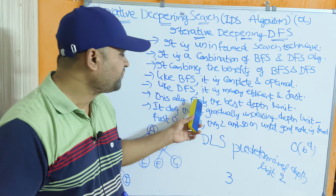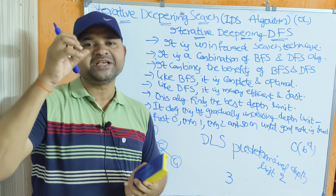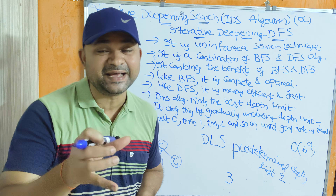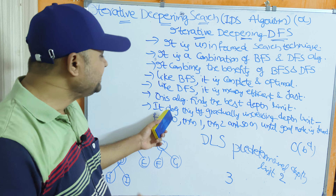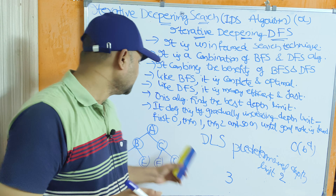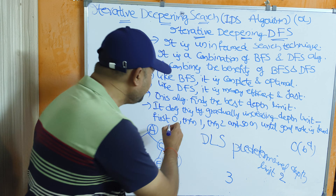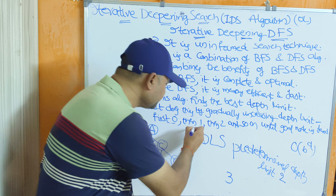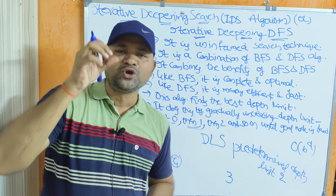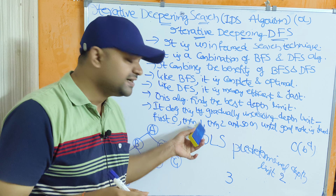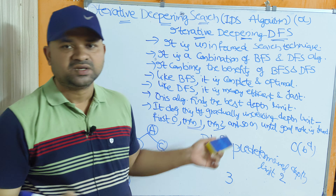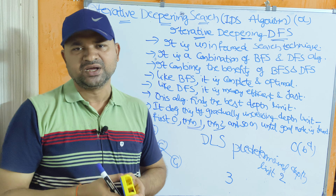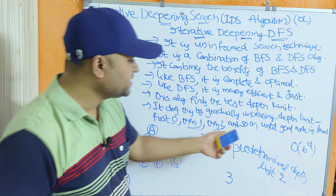Another major advantage of IDS is that it finds the best depth limit by gradually increasing it. Initially the depth limit is set to zero; if the goal node is not found, it is increased to one, then two, then three, and so on until the goal node is found.